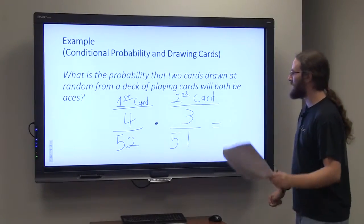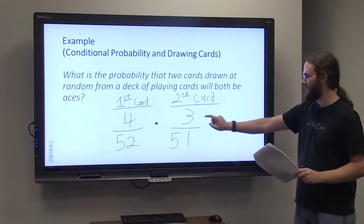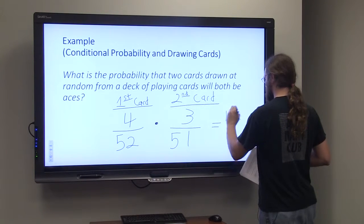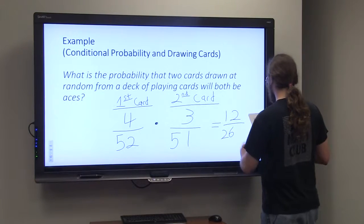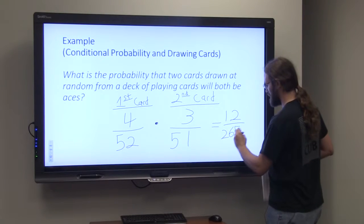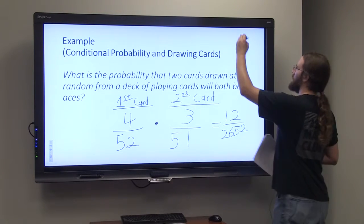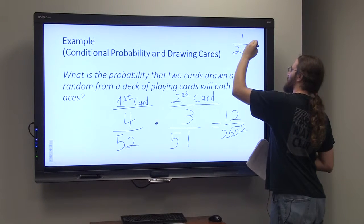So if we do 4 out of 52 times 3 out of 51, we would get 12 over 2,652, and then that would reduce to 1 out of 221.